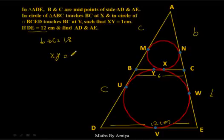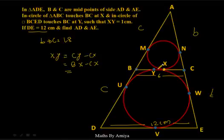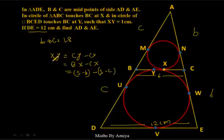XY = CY − CX. Since CY = BX (fifth concept), XY = BX − CX. BX in terms of S is S − B, and CX in terms of semi-perimeter is S − C. So XY = (S − B) − (S − C). Opening the bracket: S cancels, giving C − B = 1.